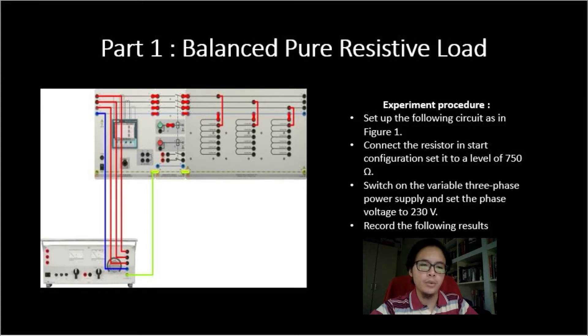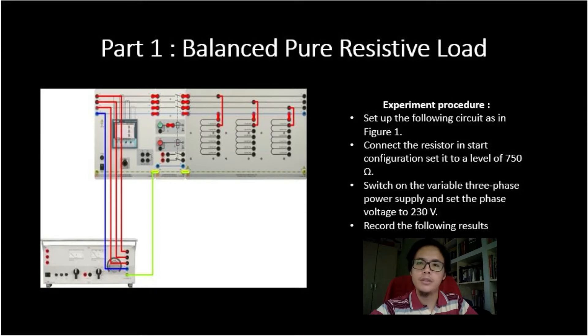Switch on the variable 3-phase power supply and set the phase voltage to 230 volts and lastly record the following results. So this is the final result for resistive load. As we can see the phase voltage and the voltage for 750,